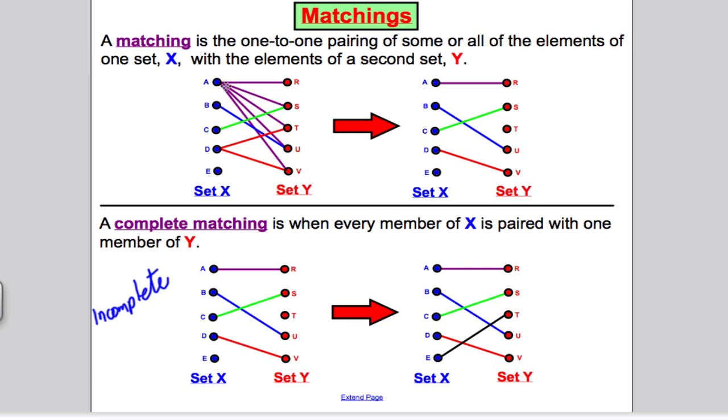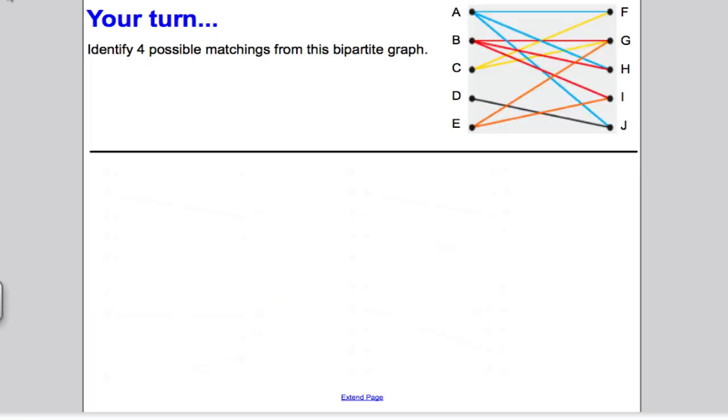To finish, I suggest we do an example. Here is an example of a bipartite graph, and I would like you to identify four possible matchings from this bipartite graph. In any case, could you identify a one-to-one, a complete matching? Pause the video, attempt the question, and then I'll show you the answers.